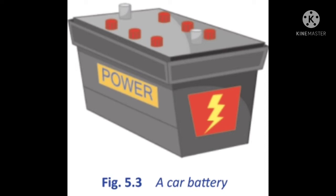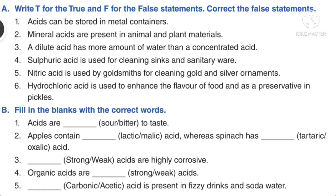Nitric acid is used by goldsmiths for cleaning gold and silver ornaments. It is also used for production of fertilizers such as ammonium nitrate. Acetic acid is the main ingredient of vinegar. Most microorganisms cannot live in an acidic environment because an acidic environment either slows down their activities or can kill them. That is why vinegar is found in many packaged food items such as pickles or ketchup.